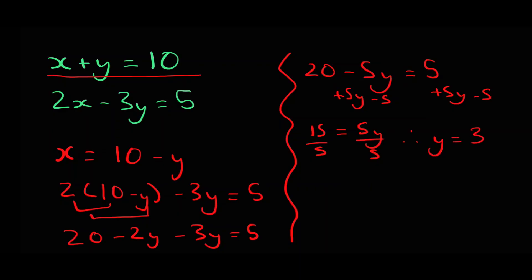Dividing both sides by 5 gives y equals 3. Now that we know what y is, we can substitute it into one of the equations to get the value of x. So if x plus y equals 10, and y equals 3, then x equals 7. So y equals 3 and x equals 7.